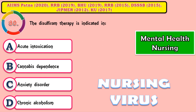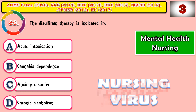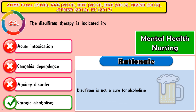Question 80: The disulfiram therapy is indicated in? The correct answer is chronic alcoholics. This drug is always referred for the chronic alcoholic person, and especially should be avoided in the intoxication period. Disulfiram is not a cure for alcoholism — it just helps the person get away from alcohol or the substance.